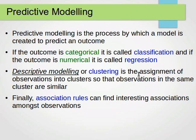Descriptive modeling or clustering is the assignment of observations into clusters so that observations in the same cluster are similar. We have many data points and we want to cluster them so each cluster only contains similar instances — we rely on some sort of similarity measure. Association rules can find interesting associations among observations; for example, in a supermarket, if customers buy bananas, we find what else they buy, and owners can place those items nearby to improve sales.